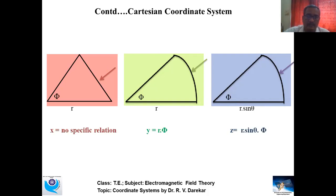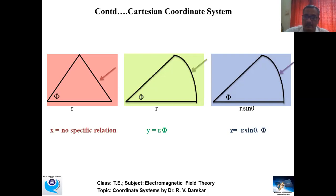There is no specific relation for a straight arrow side, but if there is a curved path, we can indicate its value by the relation y = r·φ. As we can observe, the length of the curved path is equivalent to the radius of curvature multiplied by the angle subtended at the center. Similarly, if the angle of curvature is φ and the radius of curvature is r·sin(theta), then the curved path value is Z = r·sin(theta)·φ. This is the basic curved path logic to convert curved length into linear length.